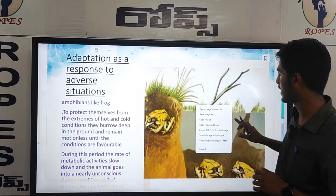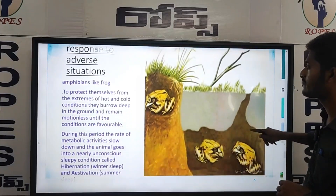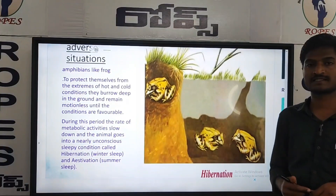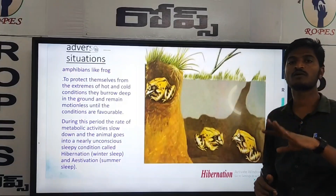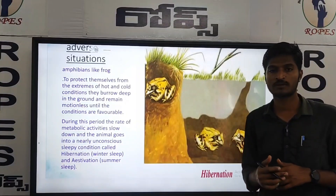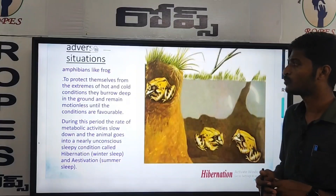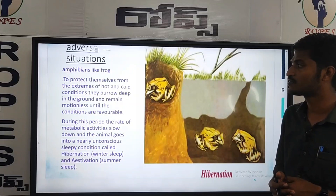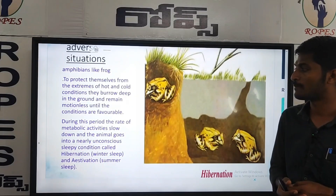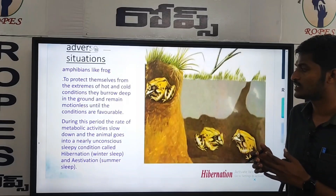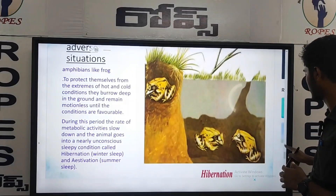Adoption also occurs in adverse situations. Amphibians, like frogs, are an example. Amphibians can develop in both water and soil conditions. To protect themselves from extremes of hot and cold conditions, frogs go deep into the ground and remain there until conditions become favorable.